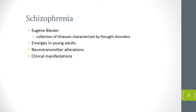Swiss psychiatrist Eugen Bleuler used the term schizophrenia for the first time in 1911, but the disease was first described and distinguished as a separate mental illness by Dr. Emil Kraepelin in 1887, when it was called dementia praecox. Kraepelin's symptom descriptions clearly correspond to what we now recognize as schizophrenia, and historical sources dating back to ancient Egypt contain similar descriptions.